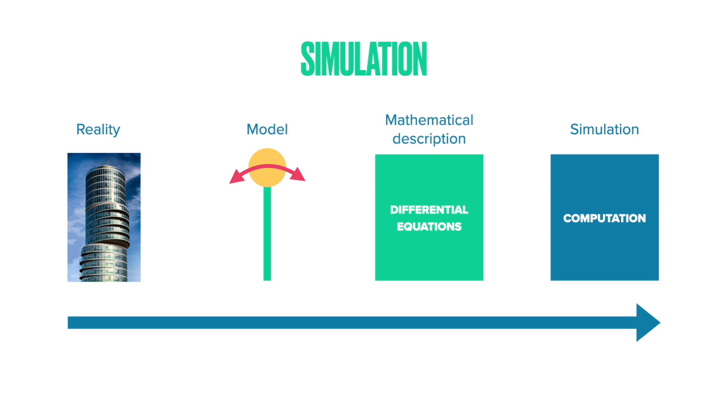Here, the swaying of the building can be represented by an inverted pendulum. Once we have this model, we need to find the equations that govern the behavior of such a model, usually in terms of differential equations. Once we have the differential equations, we can solve them using computers to simulate the dynamical behavior of the system.